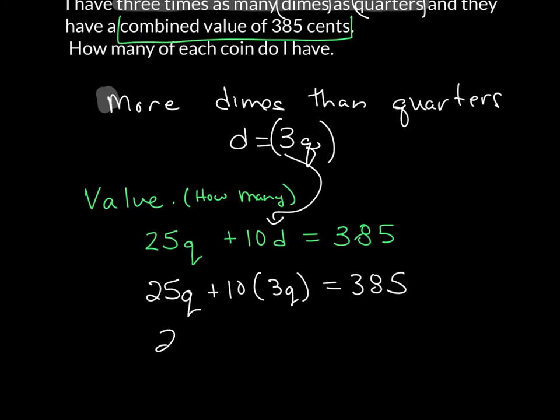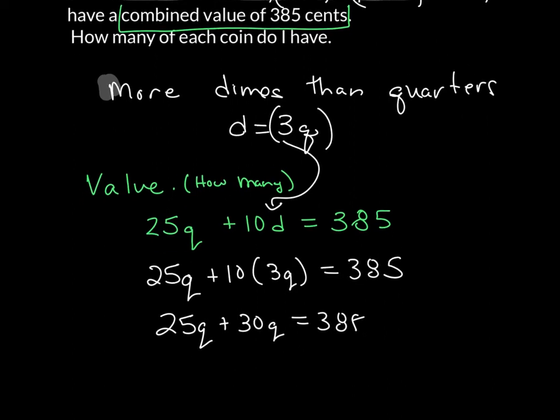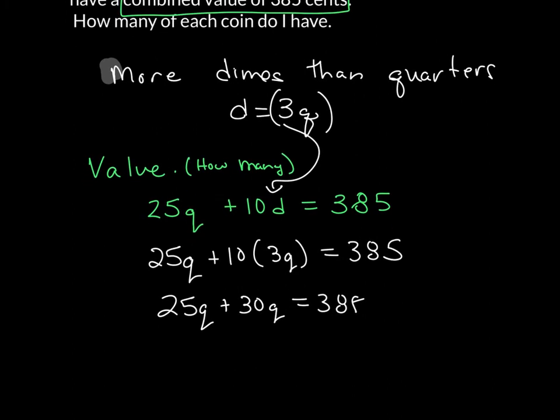Now I have 25 quarters plus 30 quarters is equal to 385. Or that gives me 55 quarters is equal to 385. I divide both sides by 55, and that tells me the number of quarters that I have is equal to 7.